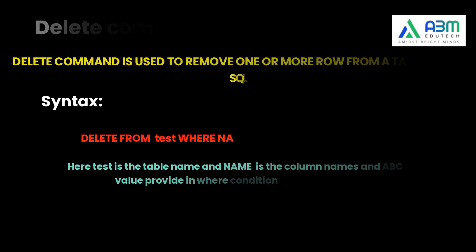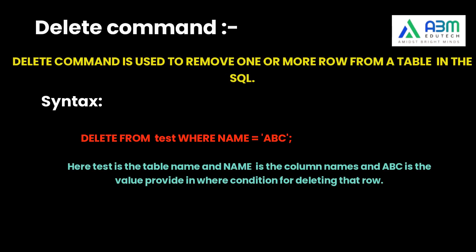Now we will see another DML command: DELETE. It is used to remove one or more rows from a table. If we want to remove any row with its records from our table, then the DELETE command is used. The syntax is: DELETE FROM table_name WHERE condition — to specify the particular data to be deleted. For example: DELETE FROM test WHERE name = ABC.